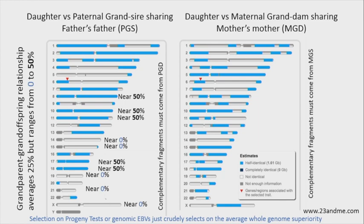On average, one chromosome has one recombination event per meiosis, meaning the chromosome you pass to offspring is generally a mixture of what you got from your father and mother. By the second generation you tend to get two recombinations. Selection on progeny tests or genomic EBVs is therefore very crude — we're just ranking animals on their whole merit over the whole genome, when what we'd really like to do is pick out the good bits and quickly put them together in an offspring.